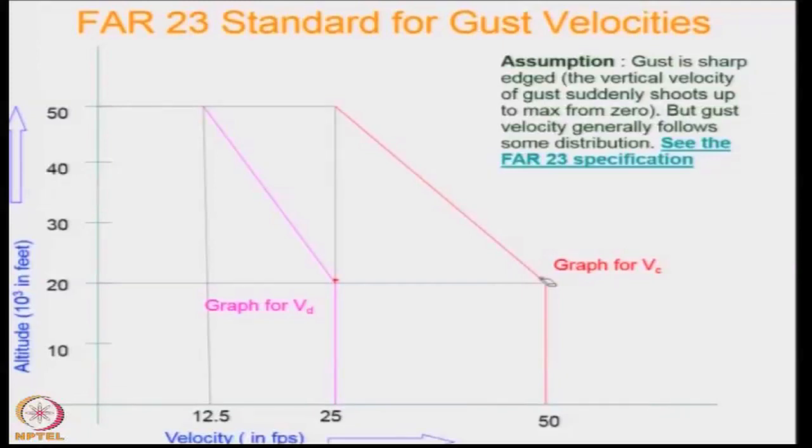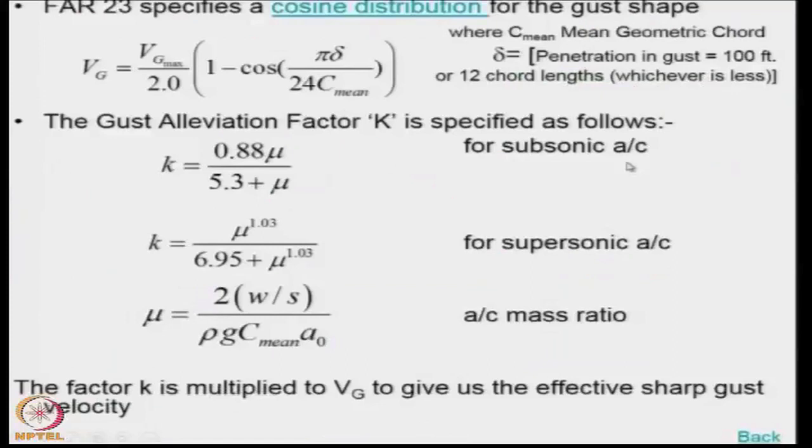In this particular discussion, we are assuming that the gust velocity is sharp. That means the gust velocity suddenly reaches a value of 25 feet per second from 0. But that is not true. Actually, the gusts are actually going to increase very slowly.